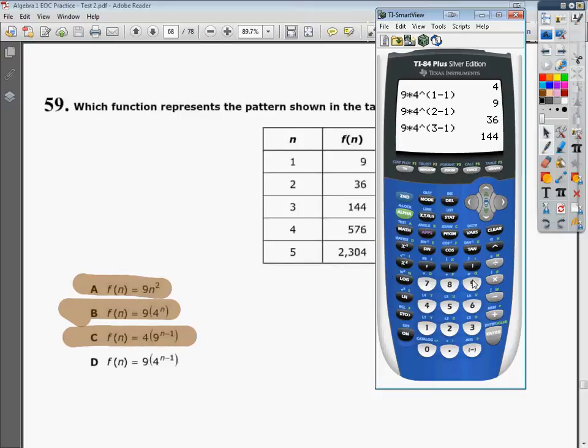So I'm going to skip to the fifth one just to see. So it's 9 times 4 raised to the 5 minus 1. And when I plugged in 5, I got 2,304. And that's the exact answer I'm supposed to get.